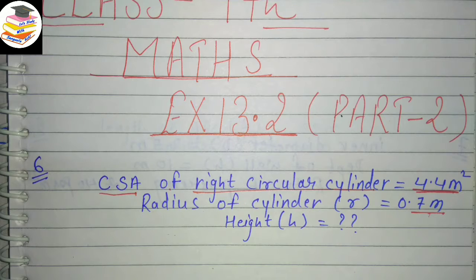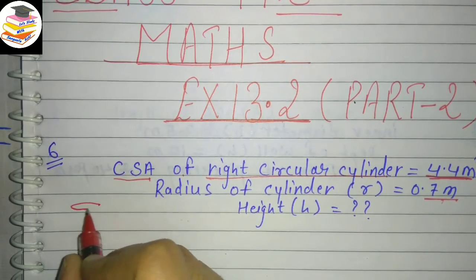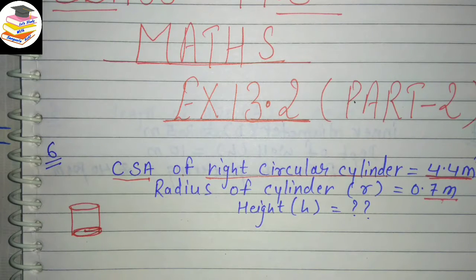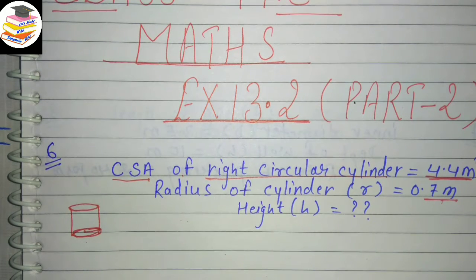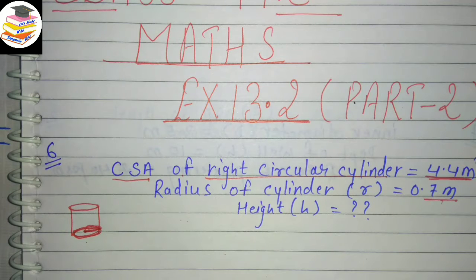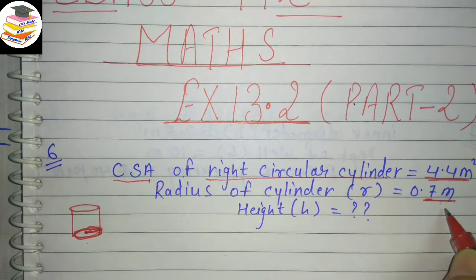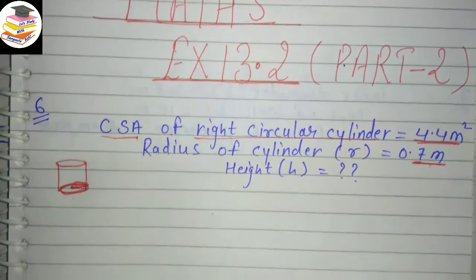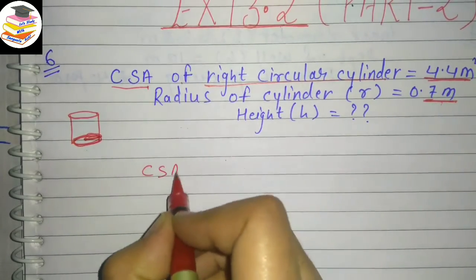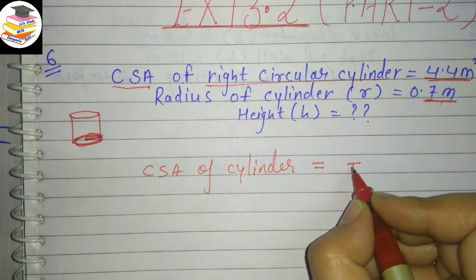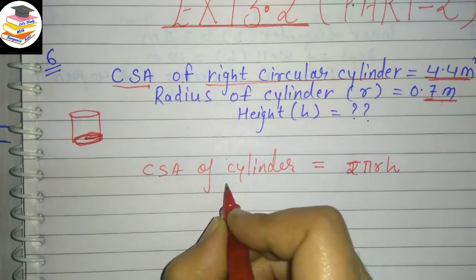What does 'radius of the base of cylinder' mean? Look — this is your cylinder, this is your base, and this is the radius. So when they say radius of the base of cylinder, it simply means the radius of the cylinder — you need not be confused. This radius is 0.7 meter. What you have to find is the height. Now, the formula for curved surface area of cylinder is 2πrh, and this equals 4.4.